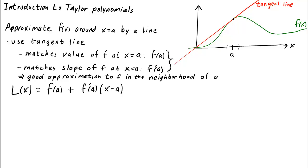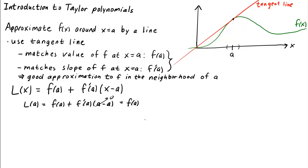Let's verify these two facts: that l of x matches both the value of f and its slope at x equals a. Let's check the value of l at a. Plugging in x equals a, we get f of a plus f prime of a times a minus a. That's zero, so we just get that l of a is equal to f of a. Indeed, we match the value of f.